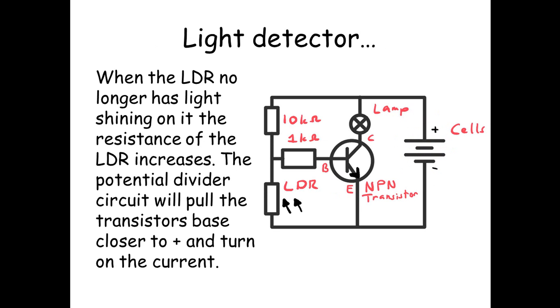So here's the circuit. When the LDR no longer has light shining on it, the resistance of the LDR increases massively. Between the 10 kilo ohm resistor—although to be honest in my example it's more like maybe 100,000 ohms.